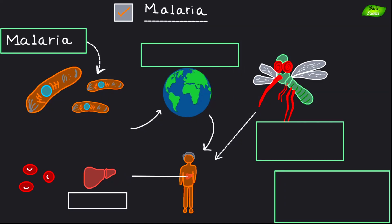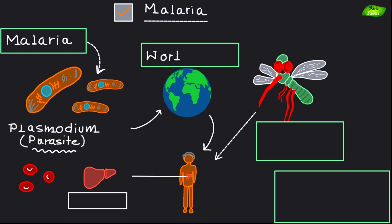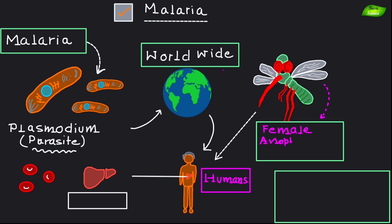Let's start with malaria — a significant parasitic infection caused by the Plasmodium parasite. It is one of the most significant parasitic diseases worldwide. Malaria is transmitted to humans through the bite of an infected female Anopheles mosquito.